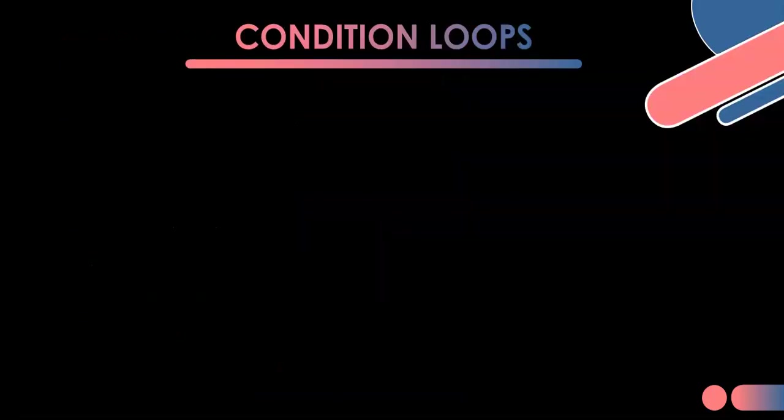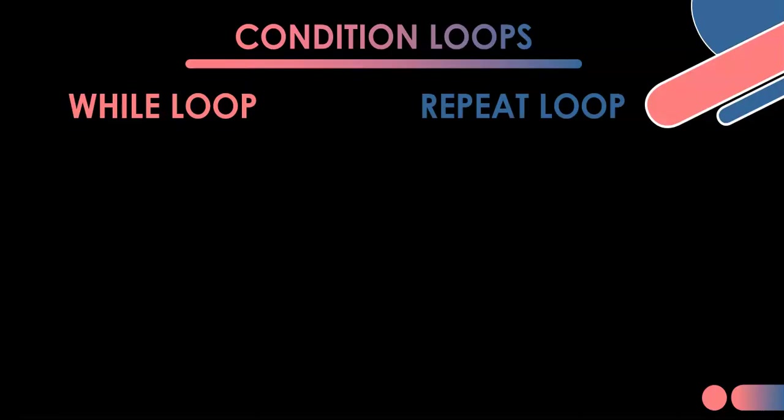In Delphi, there are two types of conditional loops — not all programming languages have both forms. The first is a while loop, and the other is a repeat loop. Most programming languages have a while loop. Let's look at what a while loop consists of.